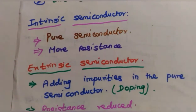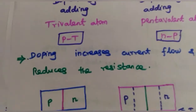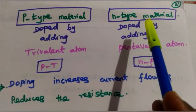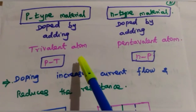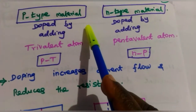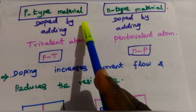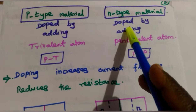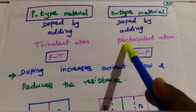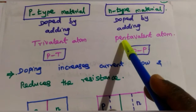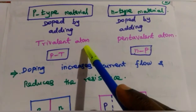Now let us see what is P-type material and N-type material. The semiconductor materials are of two types: P-type layer and N-type layer. The P-type layer is doped by adding trivalent atoms to make it an extrinsic semiconductor. The N-type layer is made extrinsic by adding pentavalent atoms. This is how we change intrinsic semiconductor material into extrinsic semiconductor material.